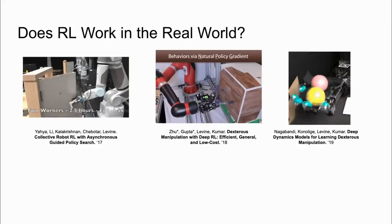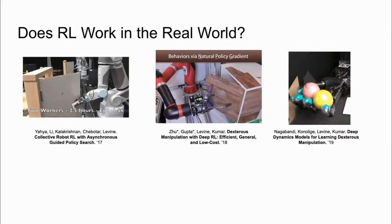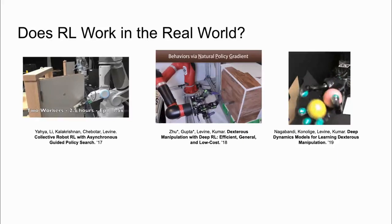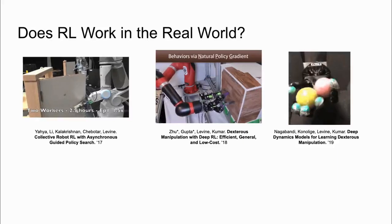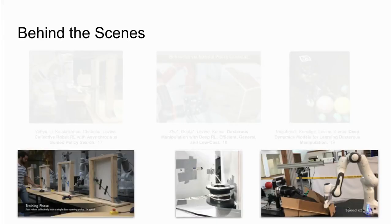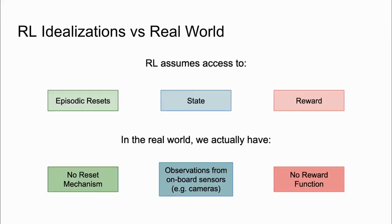Here are some examples of robots trained with RL directly in the real world. While the learned behaviors are impressive, if we take a look behind the scenes, we discover that these successes relied on elaborate and carefully constructed setups in order to obtain the necessary information to do RL. For example, sensors were placed on the doors to measure their angles, and another robot was used to replace fallen balls to the robot's hand.